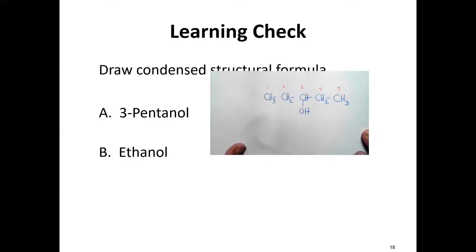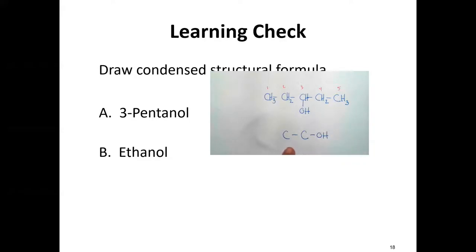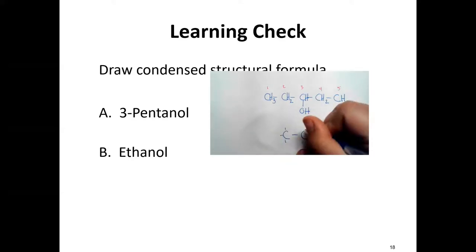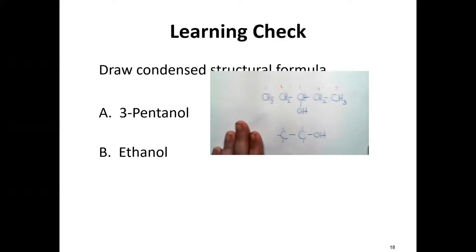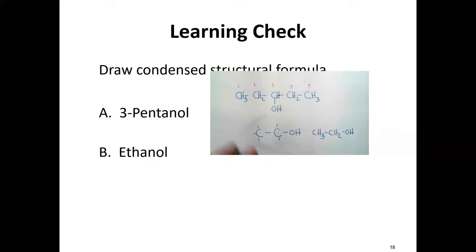For ethanol, 'eth' means two carbons. Draw two carbons — one, two. It doesn't matter which side since either way the OH is at carbon one. Attach the OH, then make sure carbon has four bonds: carbon one is missing three bonds, carbon two needs two more. Condensed, this becomes CH3CH2OH — ethanol.